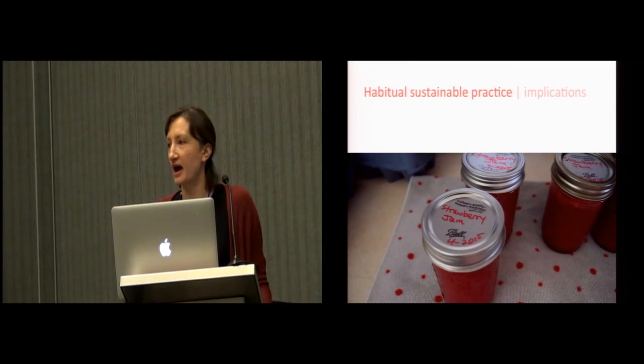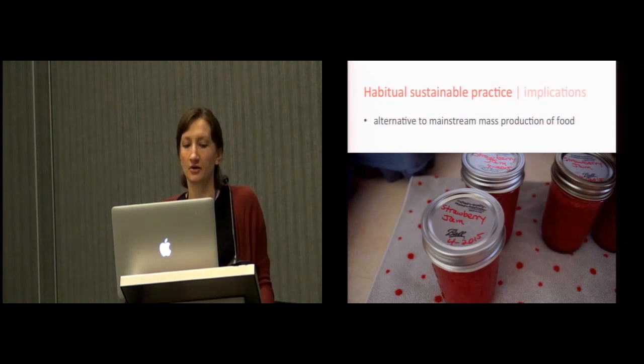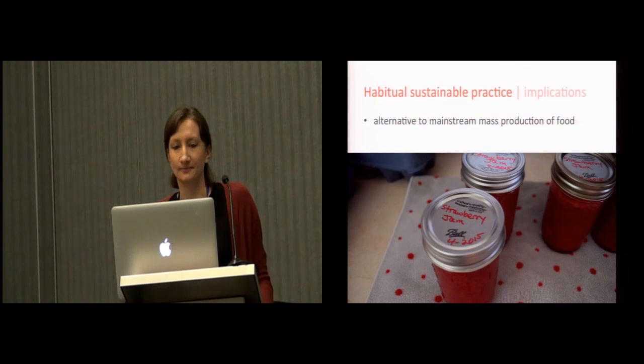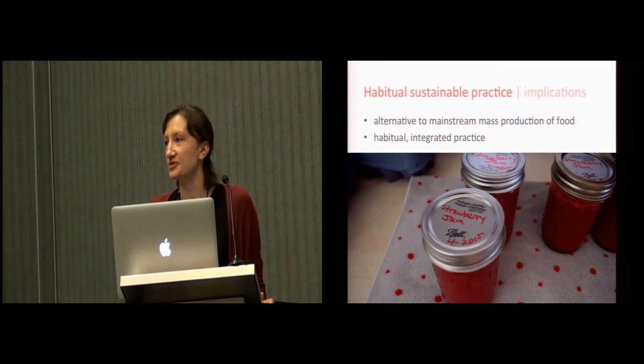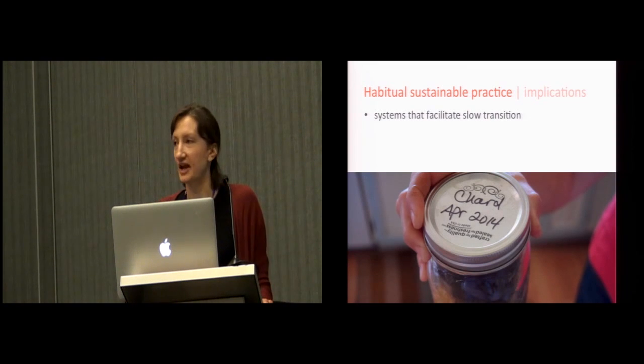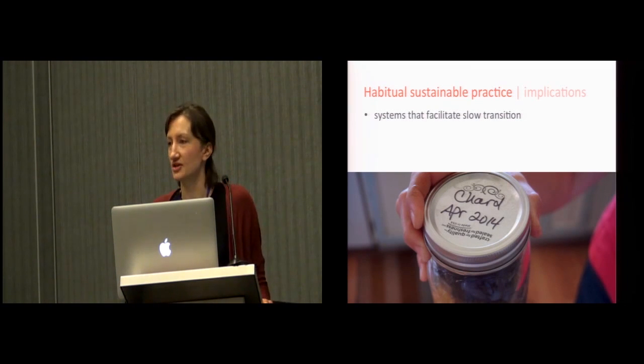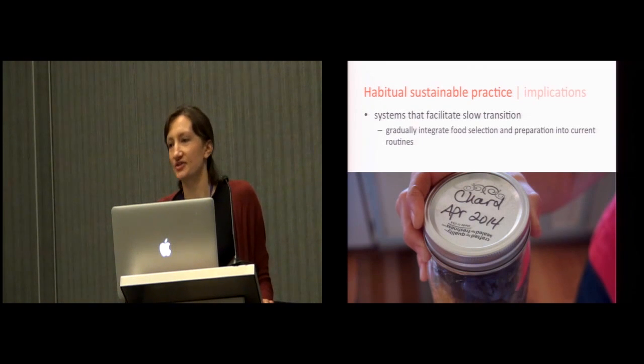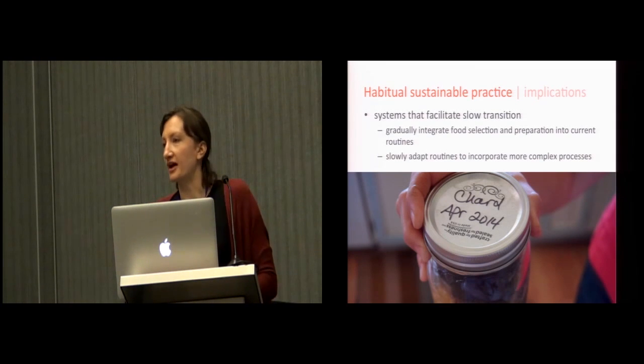Our second implication area is around this idea of habitual sustainability. Indeed, food science is aligned with sustainable HCI because the practices are around improving human health, reducing waste, working outside of mainstream food production. But what's interesting is that food science isn't this one-off intervention. It's actually really deeply integrated into participants' routines and daily lives. We saw that by slowly transitioning into food science, one project at a time, participants were able to integrate their work with their daily lives. We suggest that interactive systems do the same, meaning facilitate slow transition into habitual sustainable practice. Practically speaking, popular technologies such as calendars and task lists and reminder systems might help users incorporate food selection and preparation into their current routines. But more radically, technologies might help people adapt their routines to include more complex food science projects.